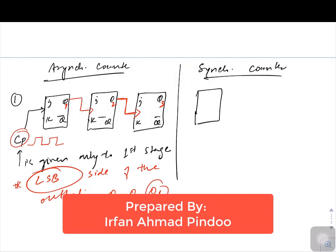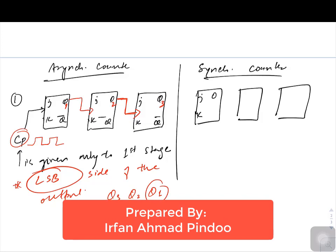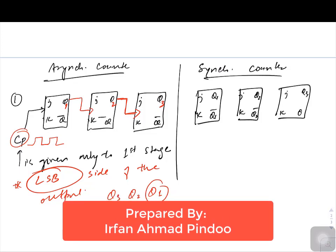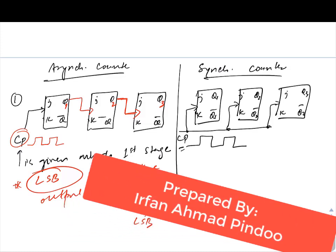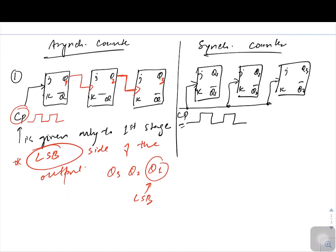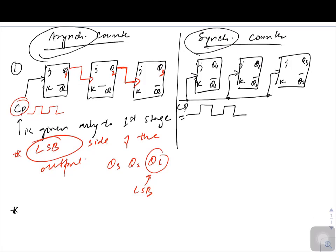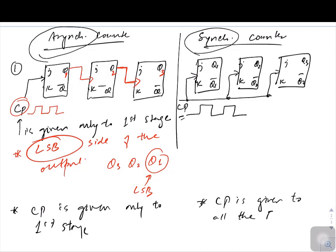Now in a synchronous counter — taking the same JK flip-flop diagram — the clock is given to all the stages simultaneously. This is the major difference between the two. Just by looking at the circuit we can say whether a counter is asynchronous or synchronous. In asynchronous, the clock pulse is given only to the first stage, i.e., the LSB. In synchronous, the clock pulse is given to all the flip-flops simultaneously.